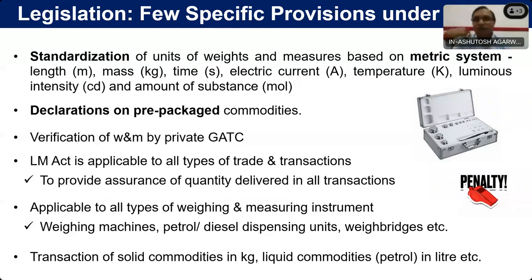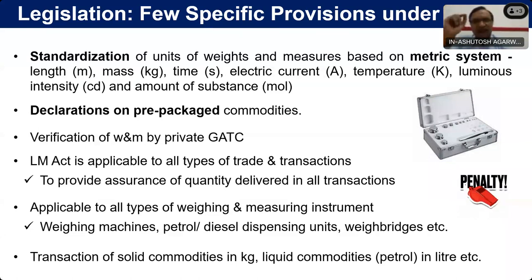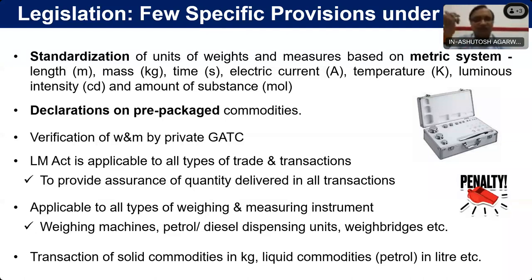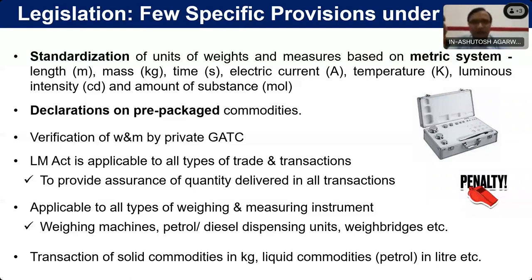Regarding standardization of units of basic measures — all our metric system or SI system: mass is in kilogram, length is in meter, time is in second, etc. All these units are now converted from artifact to natural constants. Mass is connected with the Planck constant h, length is connected with the speed of light, time is connected with the cesium atom frequency — 9,192,631,770 vibrations of the cesium atom per second. Similarly, temperature is connected with the Boltzmann constant, luminous intensity, and amount of substance.